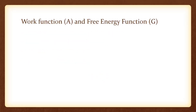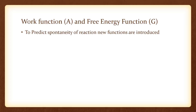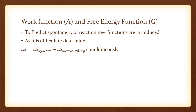Now, why are these two functions — work function A and free energy function G — introduced? To predict the spontaneous nature of the process, these two new functions are introduced. Work function A and free energy function G will help in understanding whether a given process is spontaneous or not. It is quite inconvenient to find entropy change of the system as well as entropy change of the surrounding simultaneously, and therefore these two new functions are introduced.